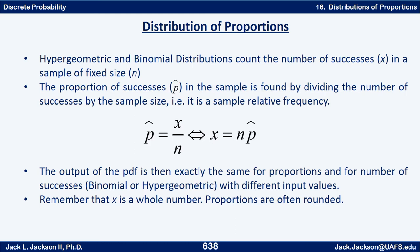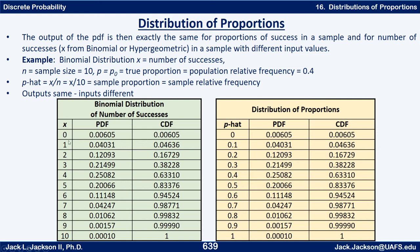Similarly in the hypergeometric distribution, we have to have whole numbers for the population size, the sample size, and the number of successes in the population. It turns out the output of the PDF for the proportion distribution is exactly the same as the output of the PDF for the x distribution, whether that is binomial or hypergeometric. So the input values are different but the outputs are the same.